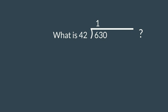I'm going to guess one. So 1 times 42 is 42. Subtract 42 from 63 and you get 21. Now you bring down the 0 and I'm going to guess again.